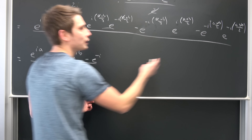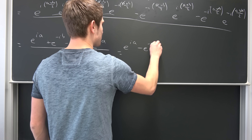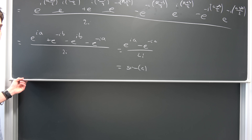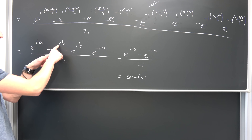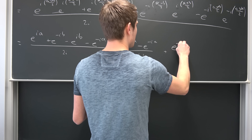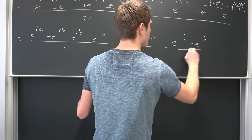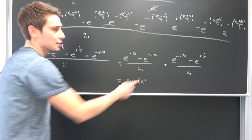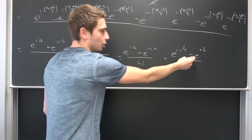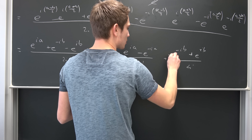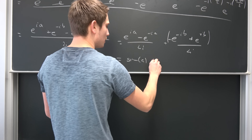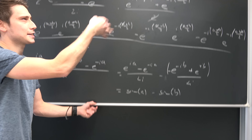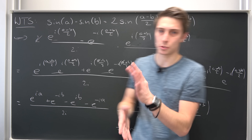Tracking this out, we are going to get e to the i times a minus e to the negative i times a, over 2 times i — and this right here is nothing but the sine of a by this exponential definition. And we have e to the negative i times b minus e to the i times b, over 2 times i. We want a negative sign out front to get negative sine of b, so we multiply by negative 1, pulling it outside. This becomes negative sine of b. So the result is sine of a minus sine of b.